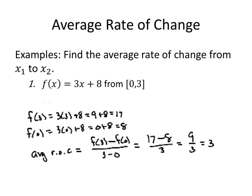Let's look at an example. Find the average rate of change from x1 to x2 for the function f of x equals 3x plus 8 from 0 to 3. In order to find the average rate of change, I'm going to find the slope. To find the slope, I need the y values. So I find f of 3, 3 times 3 plus 8, which is 9 plus 8, or 17. f of 0 is 3 times 0 plus 8, which is 0 plus 8, or 8.